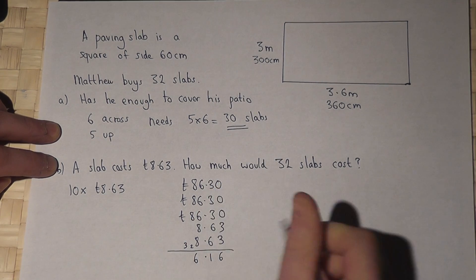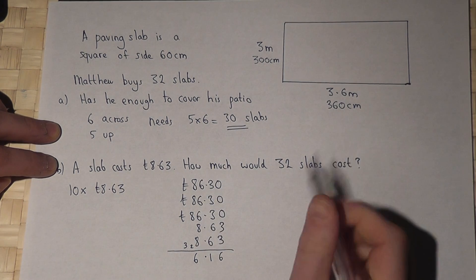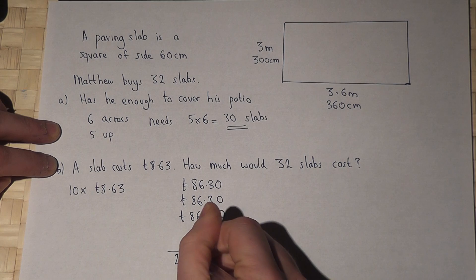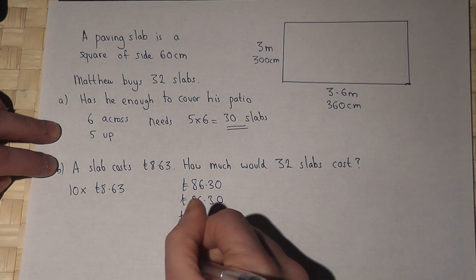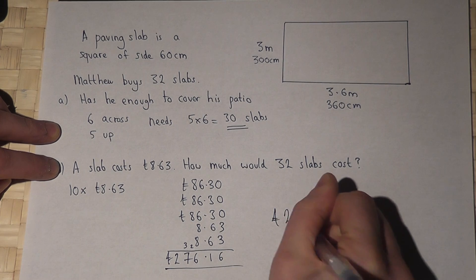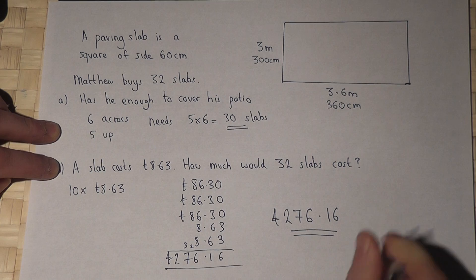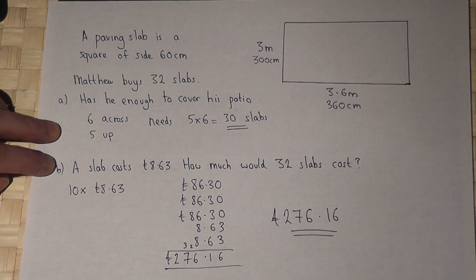Carry the 3. 8, 16, 24, plus 3 is 27. So, the total price would be 276 pounds and 16 pence.